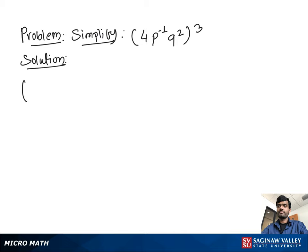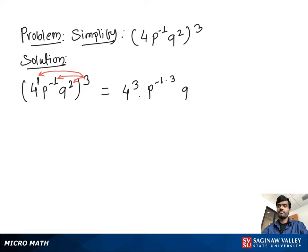Simplify 4p to the negative 1 q squared, all to the third power. First, we multiply exponents with the power: we get 4 cubed times p to the negative 1 times 3, times q to the 2 times 3.